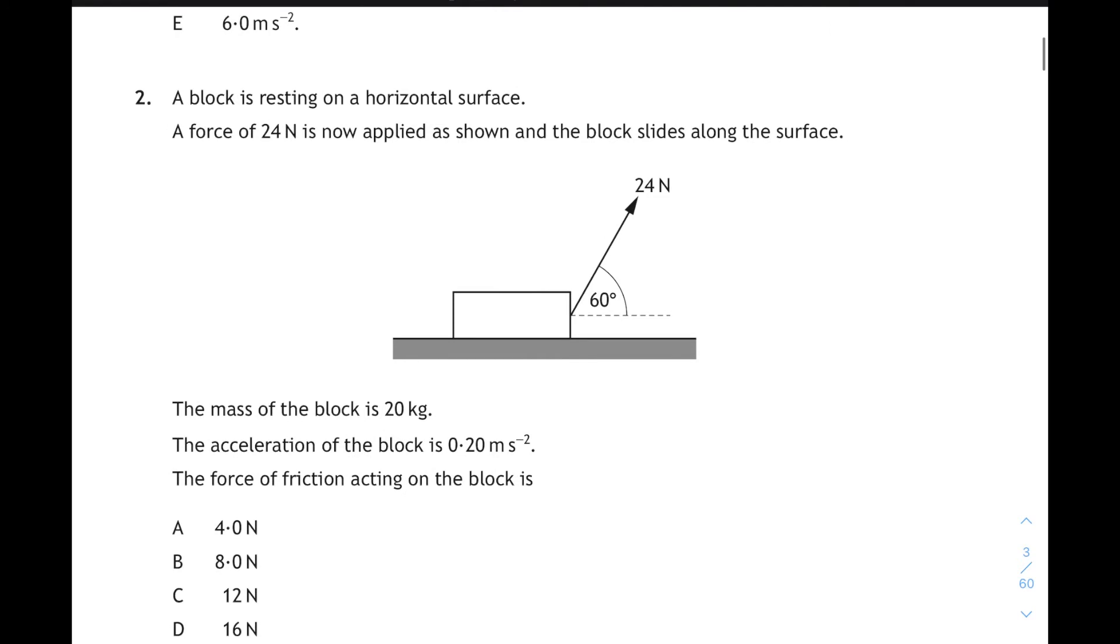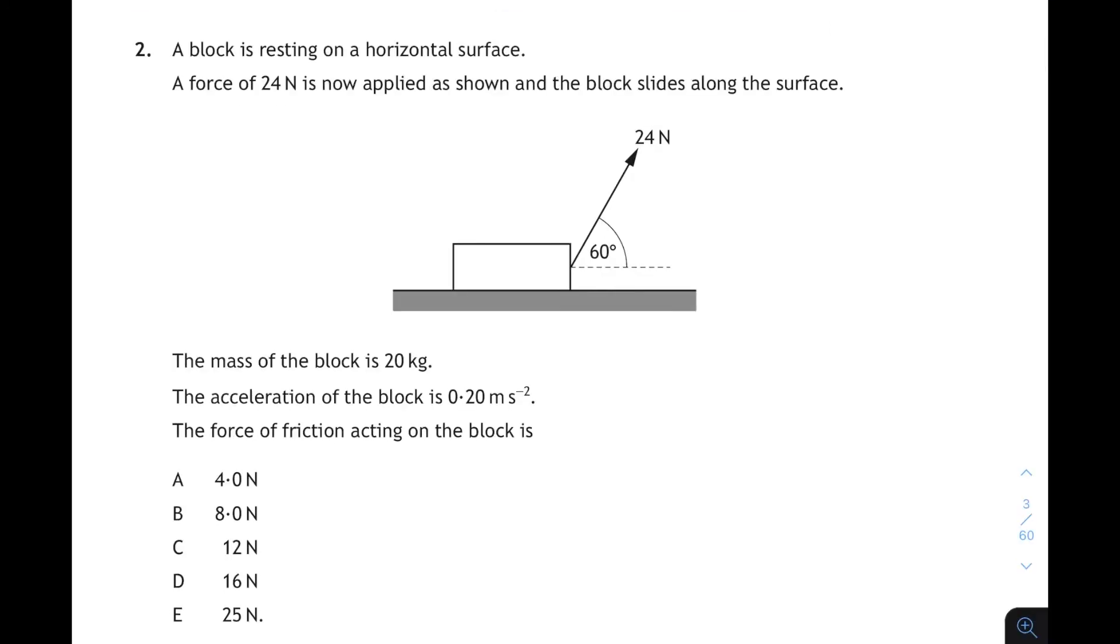Question 2. This is forces. A block is resting on a horizontal surface. A force of 24 newtons is applied as shown. The acceleration of the block is 0.2 meters per second squared. What's the force of friction acting on the block? Well, the 24 newtons is not acting horizontally. So we need to work out the horizontal component of the force. That's the adjacent side, or the horizontal side of that right-angled triangle. It's cos for adjacent. So it's 24 cos 60, and that will give us the horizontal component of the pulling force. That's 12 newtons.